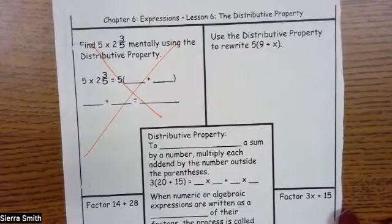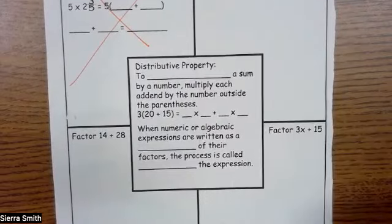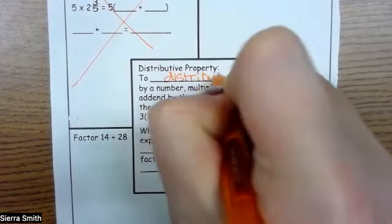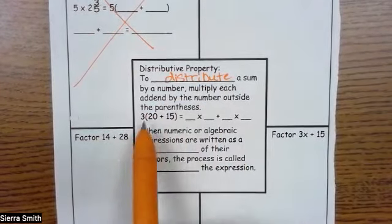All right, so we're going to use the distributive property today. Starting in the middle, distributive property: to distribute the sum by a number, multiply each addend by the number outside the parentheses.